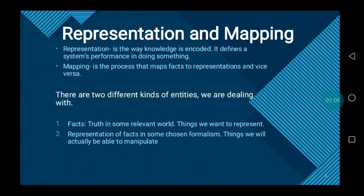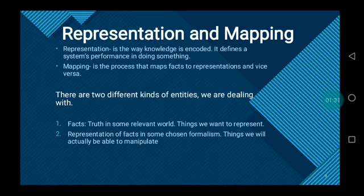Representation and Mapping. Representation is the way knowledge is encoded. It defines our system performance in doing some things. Mapping is a process that maps facts to representation and vice versa. There are two different kinds of entities we are dealing with. First is facts — truths in some relevant world, things we want to represent. Second is representation of facts in some chosen formalism — things we will actually be able to manipulate.